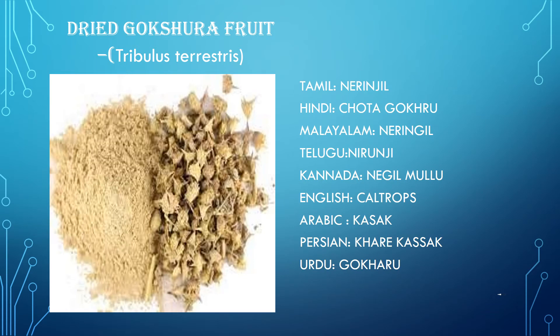For the Ayurvedic home remedy of kidney stones you may require a drug called Gokshura, whose botanical name is Tribulus Terrestris. I have added some of the regional names of the drug in the video. You may require half a kg of the drug — grind it coarsely and store it in an airtight container. Daily in the morning, take two tablespoons of this drug, add one litre of water, and give it a good boil for five to seven minutes. Filter the drink and take it whenever you feel thirsty.